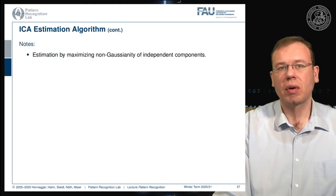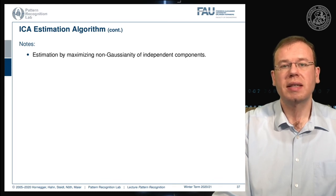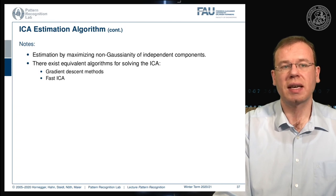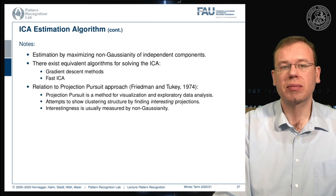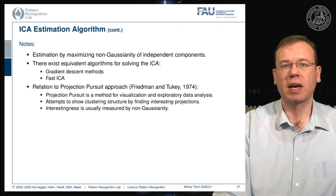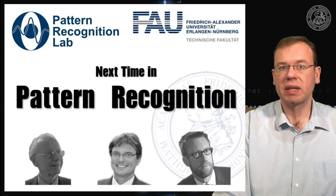Estimation is steered by maximizing the non-Gaussianity of independent components. Equivalent algorithms exist for solving ICA, including gradient descent methods and Fast ICA. There is also a relation to projection pursuit, introduced by Friedman and Tukey in 1974, which is a method for visualization and exploratory data analysis that finds interesting projections — where interestingness is measured by non-Gaussianity.